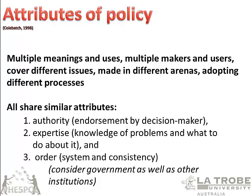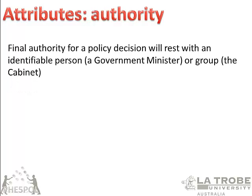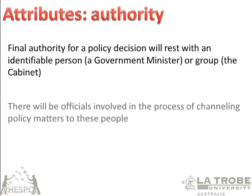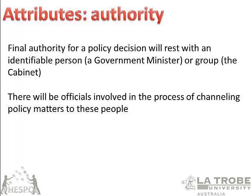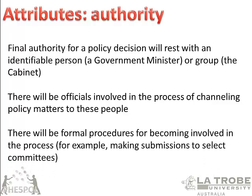You need to consider government, public policy, as well as other institutions because they interface with government and state preferences. Looking at authority first: the final authority for a policy decision will usually rest with an identifiable person — in democracies, a government minister or a group like cabinet. They take responsibility and can be held accountable for that policy, they have to justify why the policy happens or not, and they can be held to account in parliament. There will be officials involved — bureaucrats, ministries, advisory councils — and formal procedures for stakeholders to make submissions to select committees.